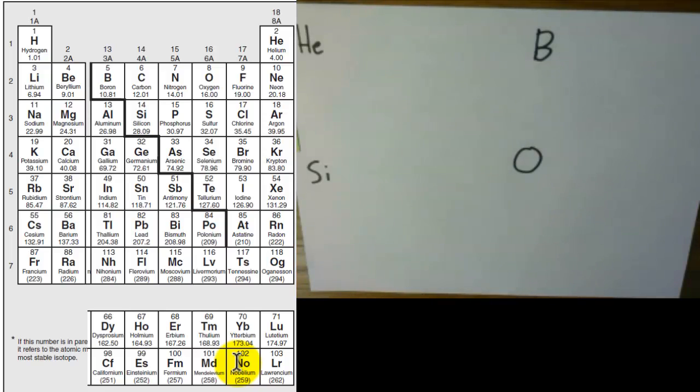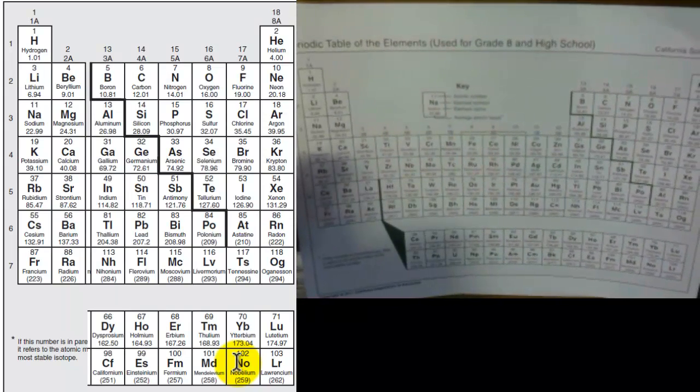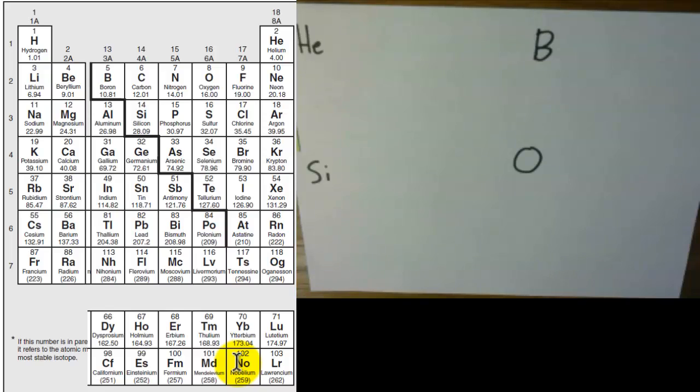The periodic table that I'm going to use is the one that you can see on the screen there. That's what it looks like printed out. I linked that one on Google Classroom in the week two topic folder. So the examples we're going to go over are helium, boron, silicon, and oxygen.